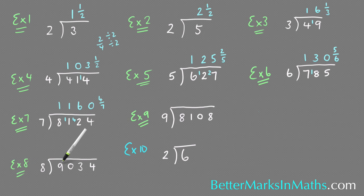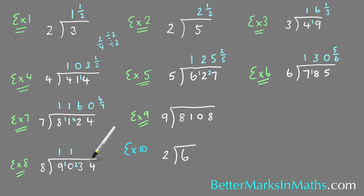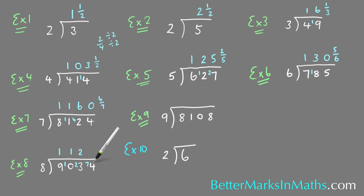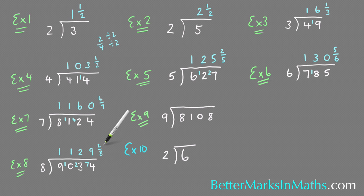Example 8: how many 8s in this number? How many 8s in 9? There's 1 with 1 left over. How many 8s in 10? There's 1 with 2 left over. How many 8s in 23? There are 2 — two 8s is 16, so there are 7 left over. How many 8s in 74? Nine 8s are 72, so there would be 9 with a remainder of 2, so that's 2 over 8. You need to simplify this — dividing both numbers by 2 gives you 1 quarter.